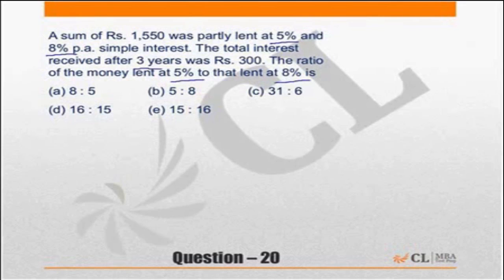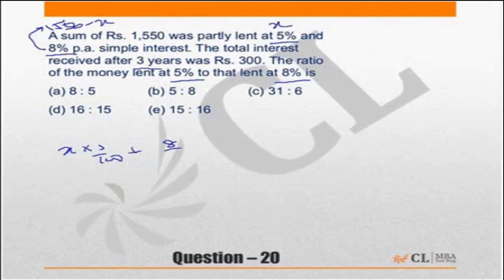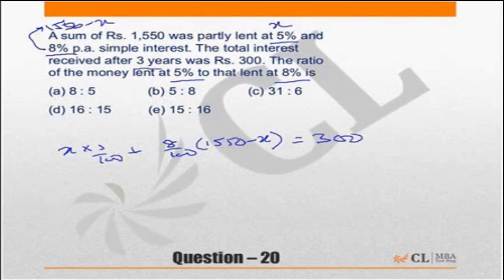The standard way of doing this question is to assume that the amount lent at 5% is X, so the amount at 8% is 1550 minus X. Then you write: X × 5/100 + (1550 − X) × 8/100 = 3 per year. This is correct but possibly a little lengthy. You could look at using allegation here.